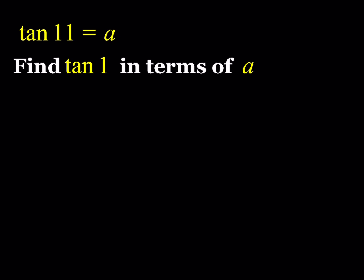So what are we going to do? We're going to be using some identities here, especially the double angle identity, which is super helpful here. So how do we associate 11 degrees and 1 degree? That's what we're supposed to figure out.